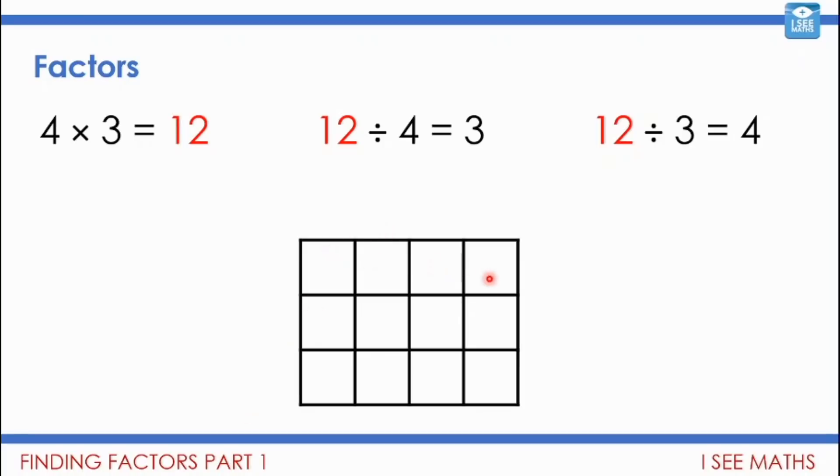First of all, what is a factor? Now, we've used area models before. And this one shows 4 times 3 equals 12. And of course, it also shows that how many 4s in 12. There are 1, 2, 3. And how many 3s in 12. There are 4: 1, 2, 3, 4. So 4 times 3 is 12. 12 divided by 4 is 3. 12 divided by 3 equals 4.